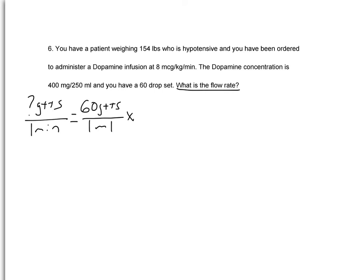Now, since the mLs are on the denominator here, we want to put that in the numerator up here, so that way we'll be able to cancel them out later. So 250 mLs over 400 milligrams times our desired dose, which is 8 micrograms per kilogram per minute. And when we do that, we'll put 8 micrograms on top. That way we'll be able to cancel these out later. Kilogram per minute on the bottom.